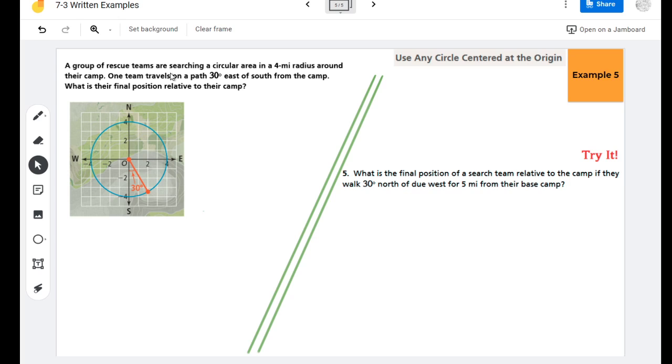A group of rescue teams are searching in a circular area with a four mile radius around their camp. Their camp is right here at the origin. One team travels on a path that's 30 degrees east of south. So here's south and they go 30 degrees east of it. It wants to know what their final position relative to their camp is - like how far south, how far east essentially.